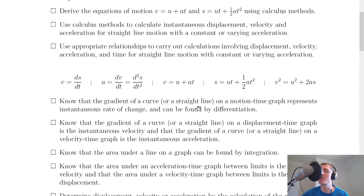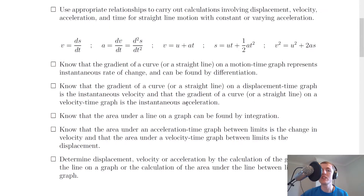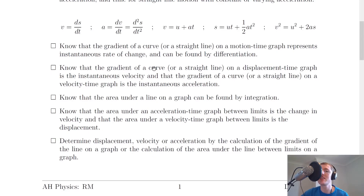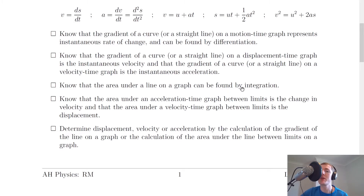Remember you saw these three equations at higher levels, so you just need to be able to use them. You need to know that the gradient of a curve or a straight line on a motion time graph represents instantaneous rate of change and can be found by differentiation. The gradient of a curve or straight line on a displacement time graph is the instantaneous velocity, and the gradient on a velocity time graph is the instantaneous acceleration. You should also know that the area under a line on a graph can be found by integration, which is particularly useful when the area is not a simple shape like a rectangle or a triangle — so if it's a curved line you can find the area using integration.